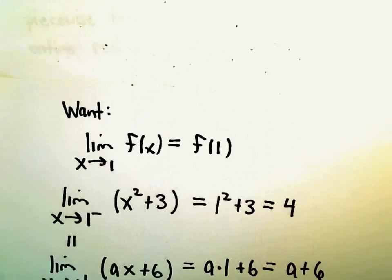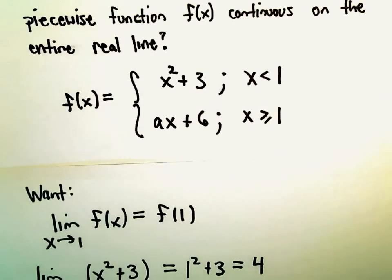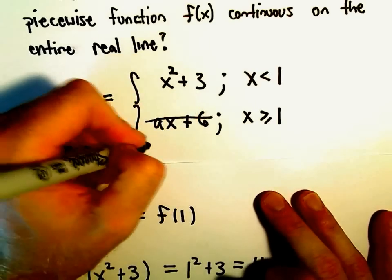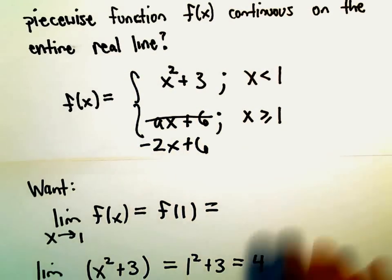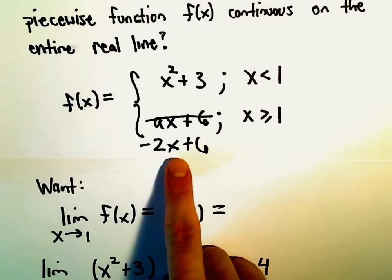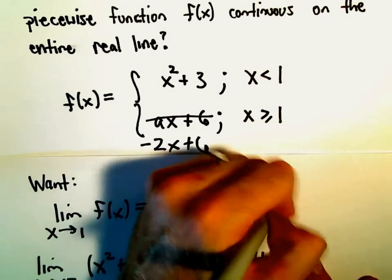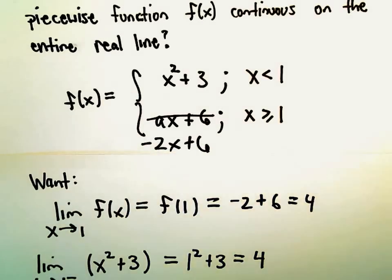And notice, now if you plug in the x-coordinate of 1, we've now figured out that this is the function. We should be using negative 2x plus 6. Notice if you plug 1 into that, we'll just get negative 2 plus 6, which will give us the value 4 that we want.